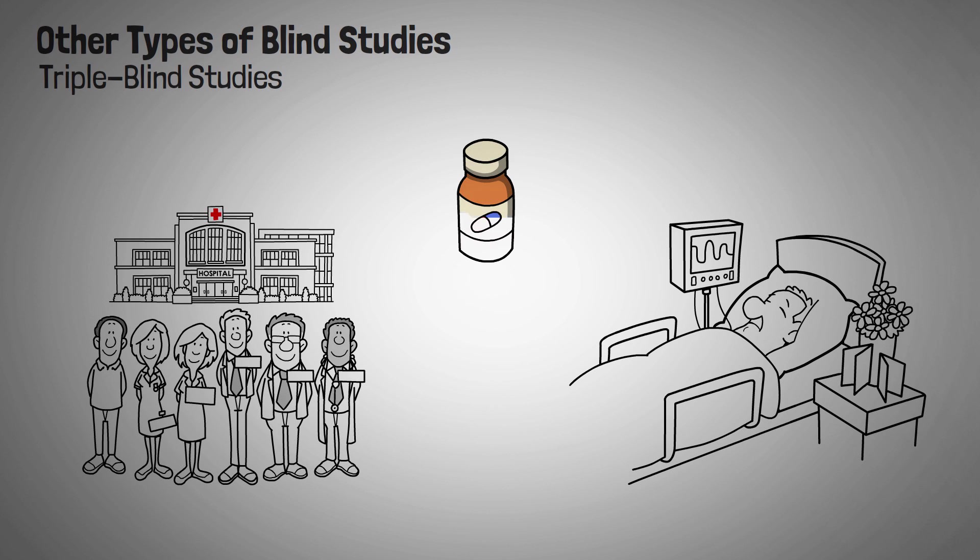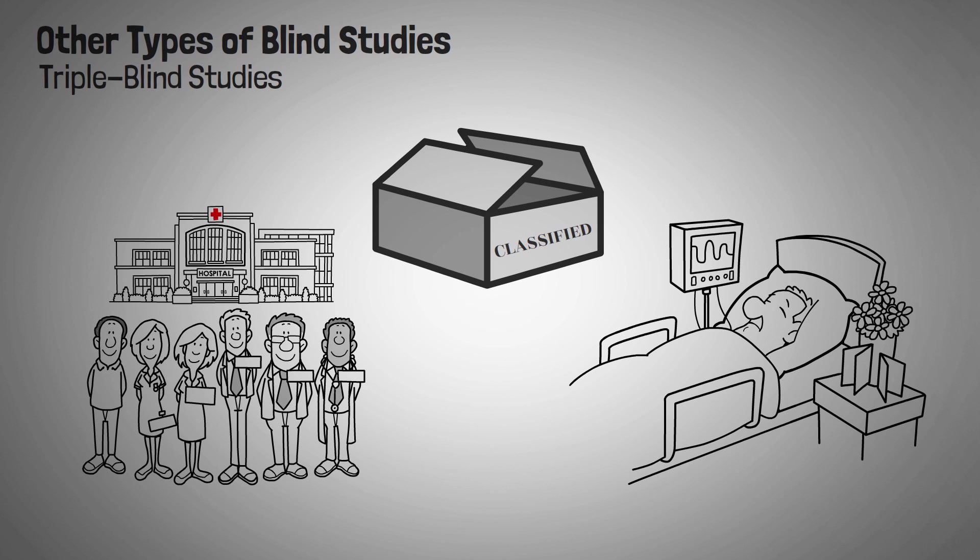Next up, we have triple-blind studies. Triple-blind studies are clinical trials in which knowledge about the treatment is hidden not only from the subjects and the experimenters, but also from anyone else involved in organizing the study and data analysis.